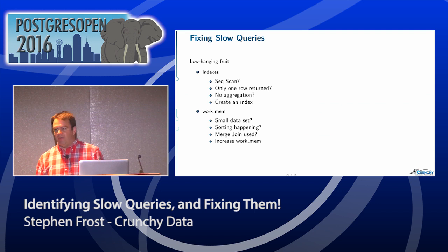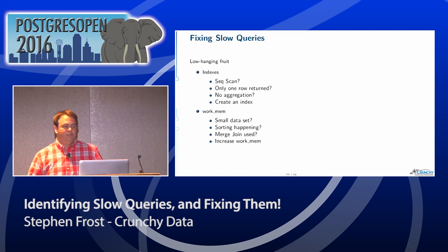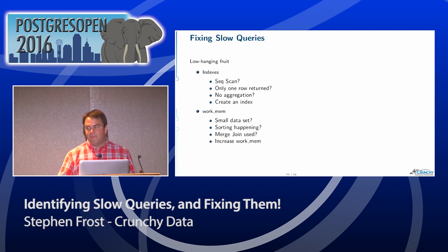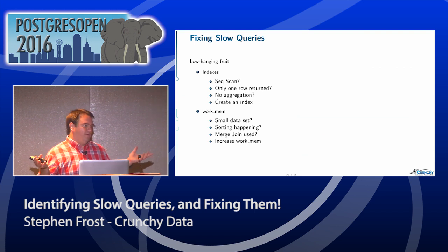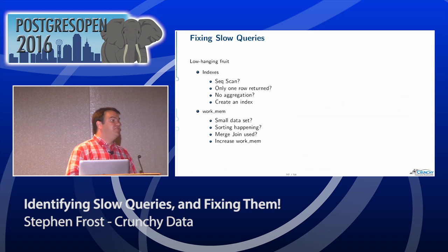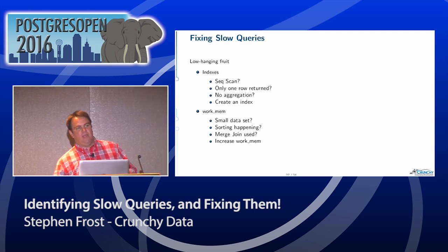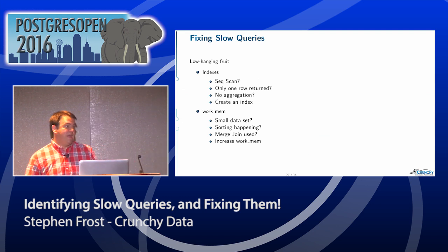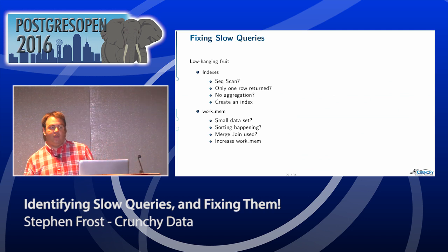I talked a lot about things I like — I like hash join, I like hash aggregate. What Postgres needs to make those happen is work_mem. If you have a small data set and you're seeing sorting happening or a merge join being used, you can increase work_mem. Increasing work_mem means Postgres has the opportunity to consider doing a hash join or hash aggregate. If work_mem is too low, it won't even consider it because it knows the hash table is going to be a certain size. One really cool thing with Postgres: you can set work_mem on a connection and change it during that connection's lifetime without impacting other connections. So if you have a particular query that needs a lot of work_mem, you can increase it just for that query and then reset it back.